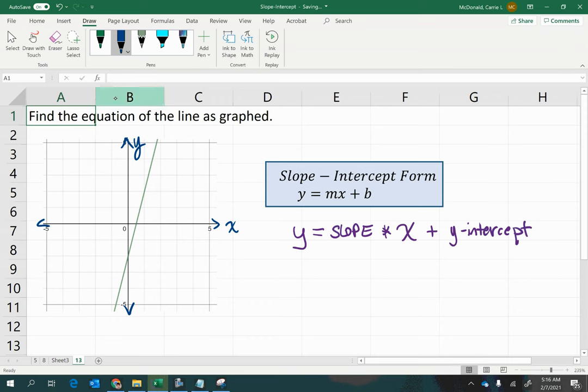So where does this green graphed line cross the y-axis? It looks like it's happening right about there. And so if we count from 0 down 1, 2, then we get our y-intercept coordinate of negative 2. So now we can come in and replace the y-intercept portion of this with negative 2.